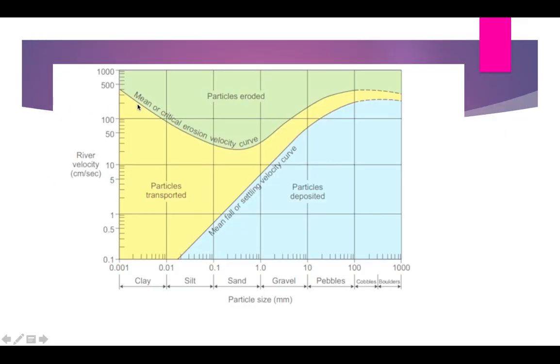Here we can see a typical Hjulstrom diagram with two axes, Y and X. Both axes have logarithmic scales: 0.1, then 1, then 10, 500, then 1000—so 10 times the range. It's a logarithmic scale: 0.001, 0.01, 0.1, 1, and so on.